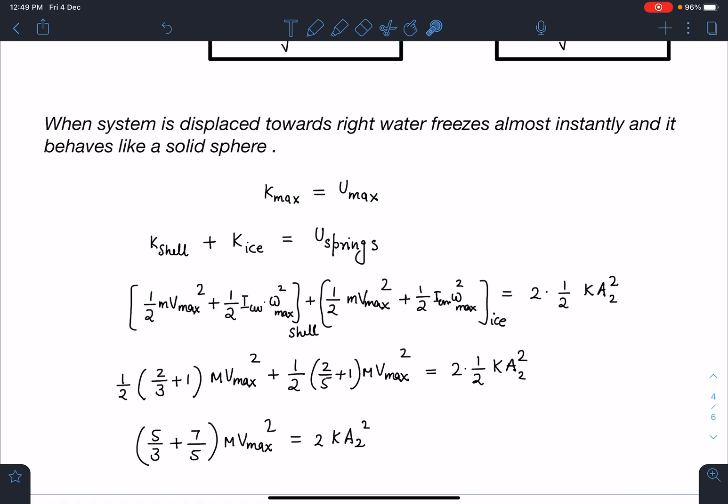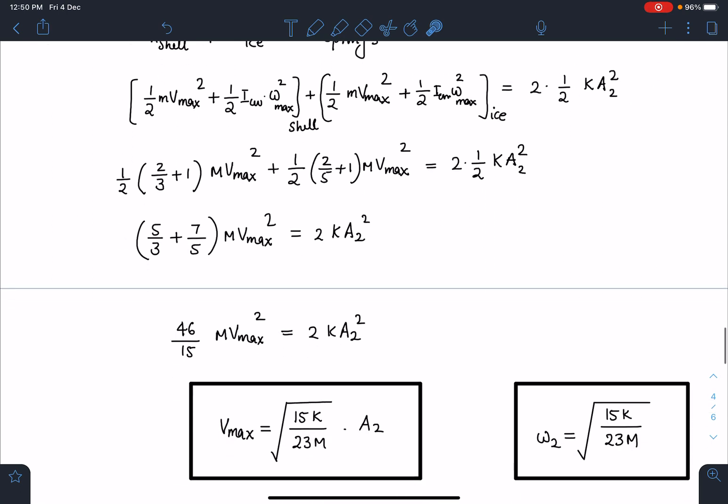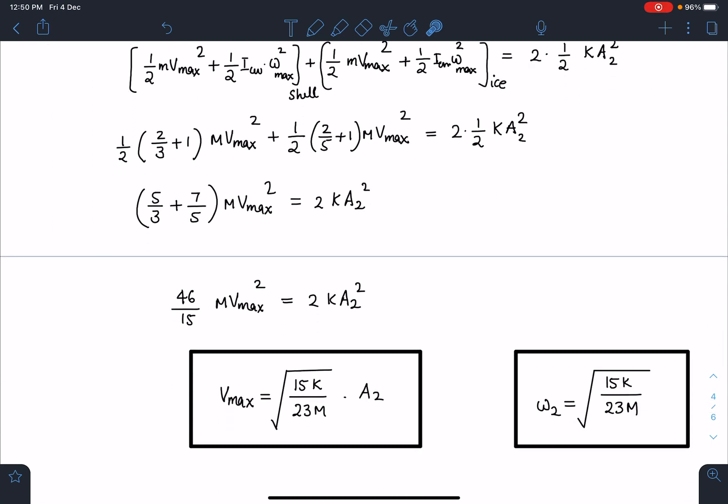When I simplify this, I can write this value as 1/2(lambda + 1)Mv_cm² where lambda value is 2/3 for the shell and 2/5 for the solid sphere. When I simplify these equations, I get v_max equals √(15K/23M) times A₂. This is omega_2 for the rightward motion.